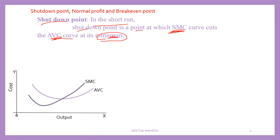Diagrammatically, on the x-axis we have output and on the y-axis we have cost. Here you can see the average variable cost curve, which is minimum at this point. When the average variable cost is at its minimum, the SMC curve cuts the AVC curve from below — this point we call the shutdown point.